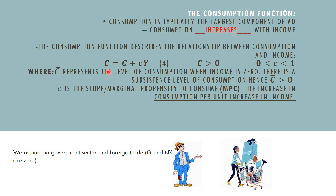You may recall that a consumption function looks something like this. Consumption has an autonomous component, c-bar, plus an induced component, little cy. Autonomous consumption, or independent consumption, is that level of consumption that occurs when income is zero. Autonomous consumption is that part of consumption that will still occur even if income is zero.